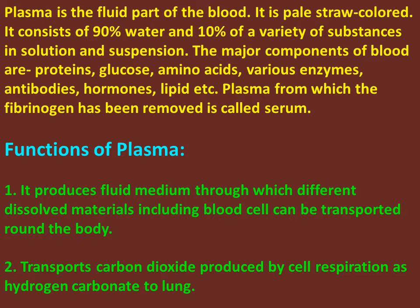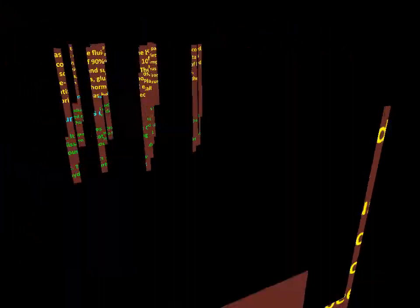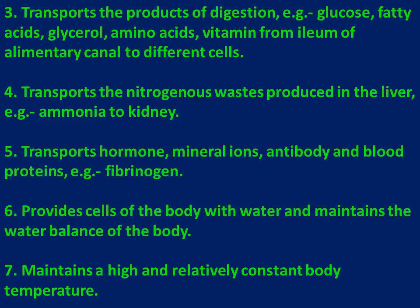Functions of plasma: Number one, it provides a fluid medium through which different dissolved materials, including blood cells, can be transported around the body. Number two, it transports carbon dioxide produced by cell respiration as hydrogen carbonate to the lungs. Number three, it transports the products of digestion — for example, glucose, fatty acids, glycerol, amino acids, and vitamins — from the small intestine to cells.